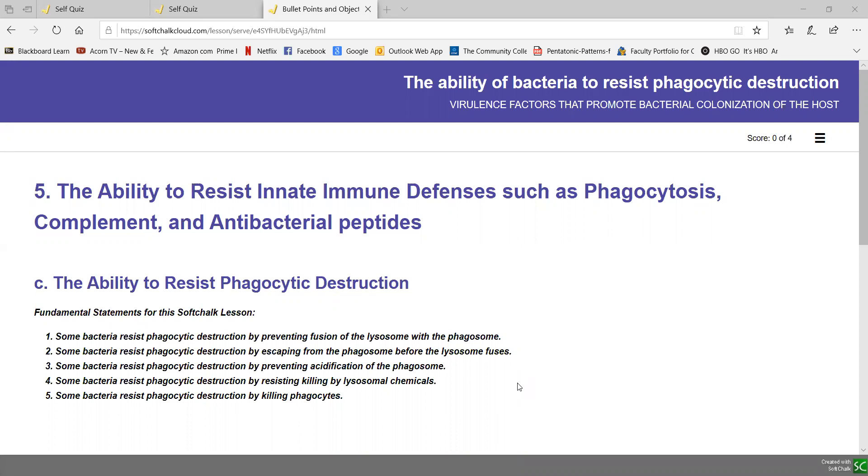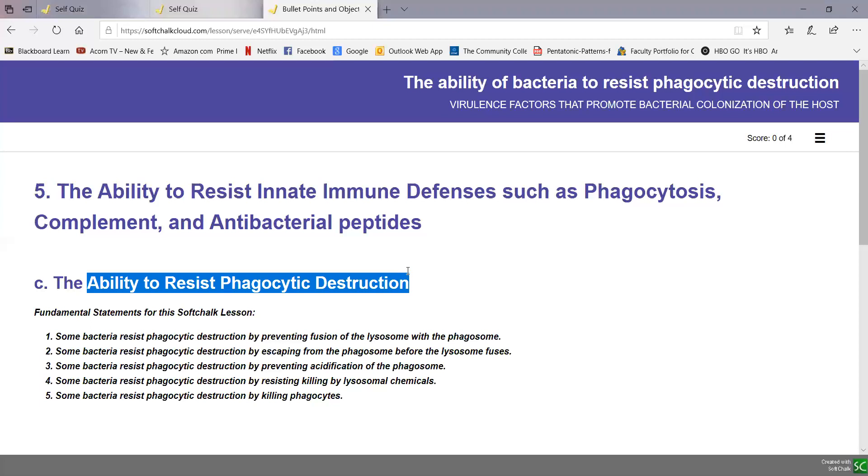In the previous soft chalk lesson, we looked at how bacteria can resist phagocytic engulfment as well as antibacterial peptides, parts of innate immunity. In this soft chalk lesson, we're going to look at the ability to resist phagocytic destruction once they are engulfed.